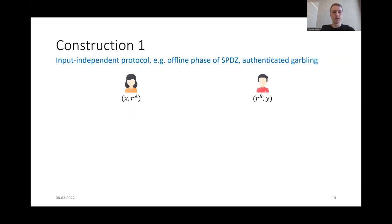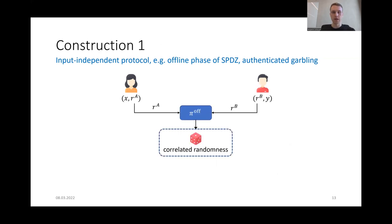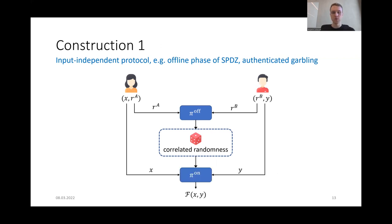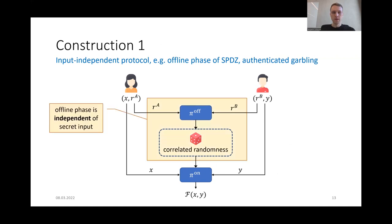Our first construction yields an input-independent protocol. Such a protocol can be used for the offline phase or pre-computation phase of so-called offline-online protocols, for example SPDZ and authenticated garbling. These offline-online protocols use an offline protocol where parties only use random values as input to set up some correlated randomness. This correlated randomness can then speed up the online phase, where the parties actually use their inputs to get the output of the function evaluation. The first part is totally independent of the secret inputs of the parties.